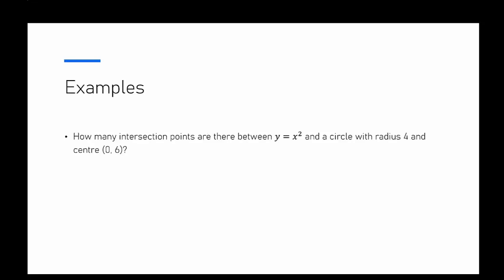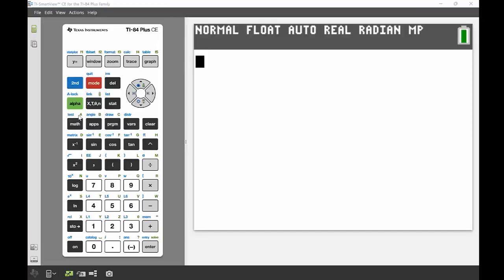Getting straight into it, our first example is: how many intersection points are there between y equals x squared and a circle that has a radius of four and a center of zero and six?